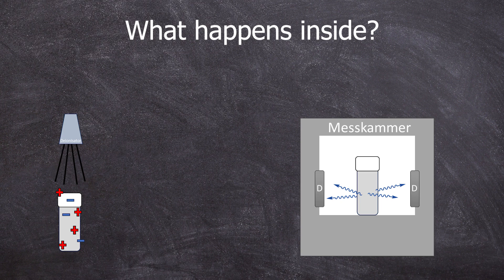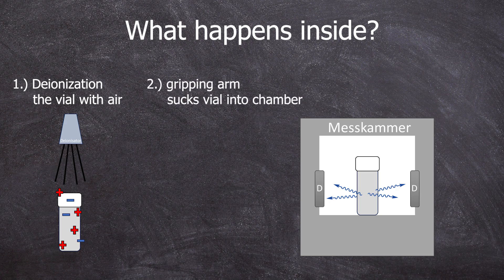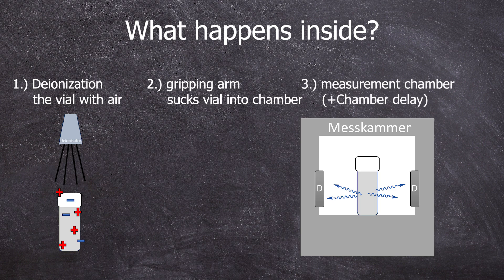So now we have successfully started a measurement, but what happens inside? First, a gripping arm uses negative pressure to pick up the lid of one of these vials and put them into the measurement chamber. There, three photodiodes are positioned at 120 degrees to each other.